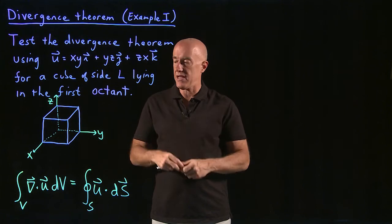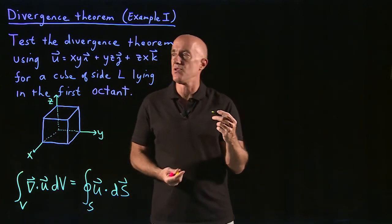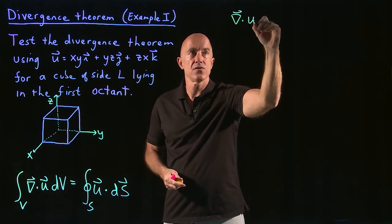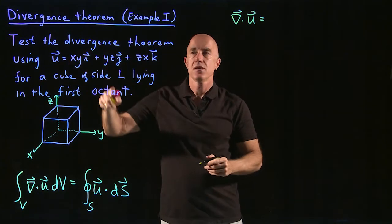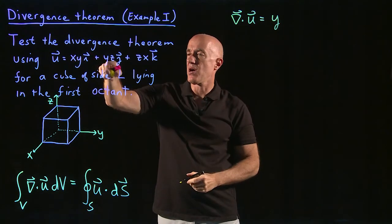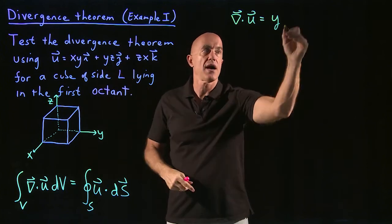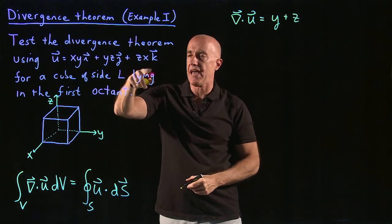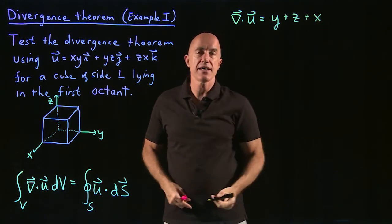Let's start with the left-hand side. To compute the integral over the volume of the divergence of u, we need del dot u. That is the partial of u1 with respect to x — the derivative of xy with respect to x is y — plus the partial of u2 with respect to y — the derivative of yz with respect to y is z — plus the partial of u3 with respect to z — the derivative of zx with respect to z is x. So del dot u equals x + y + z.